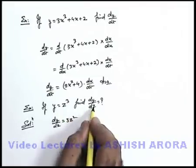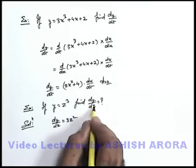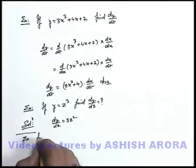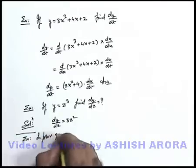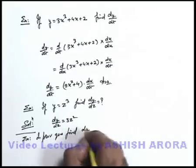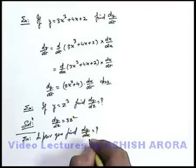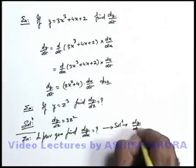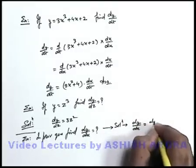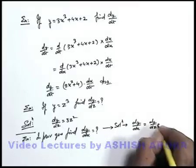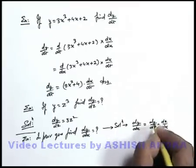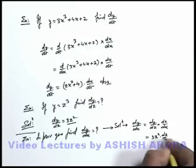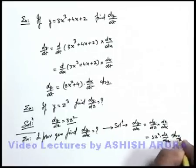But now we are required to find differentiation of y with respect to some other variable. If we are required to find dy/dx, we can directly write: dy/dx = (dy/dz) · (dz/dx). From the previous result, dy/dz = 3z², so this becomes 3z² · (dz/dx). This will be the answer to this question — the value of dy/dx.